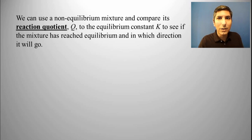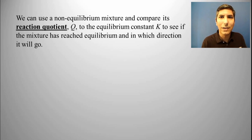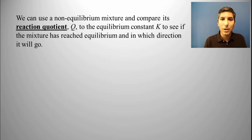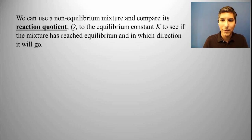We can take a look at a non-equilibrium mixture and calculate something called its reaction quotient. We can then compare that reaction quotient to the equilibrium constant to see if that mixture is at equilibrium, or if not, in which direction it's going to go — toward the left or toward the right.